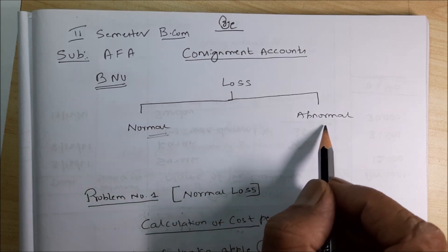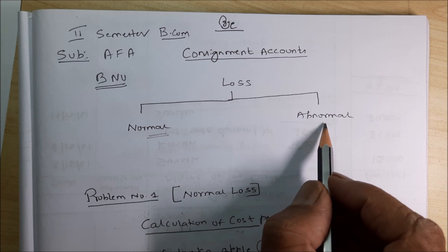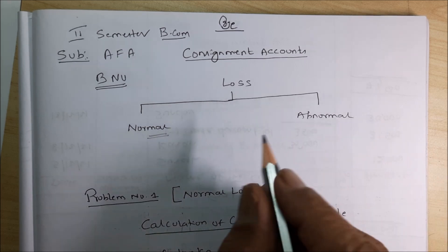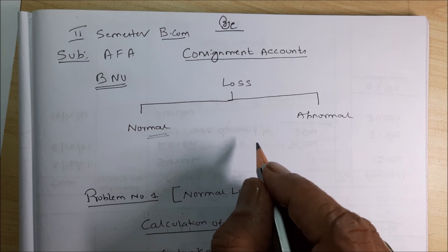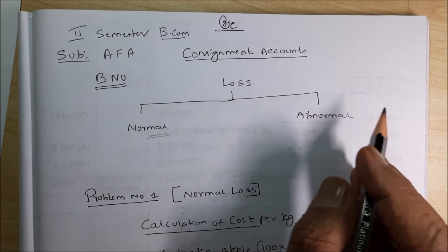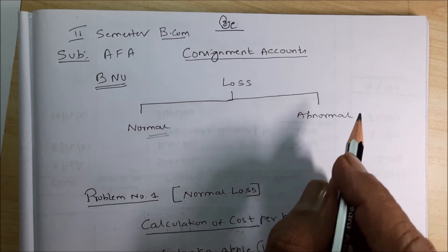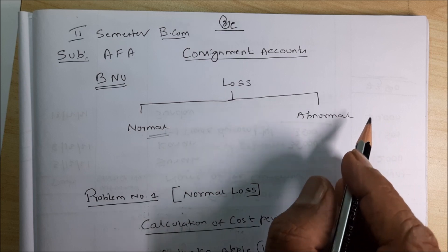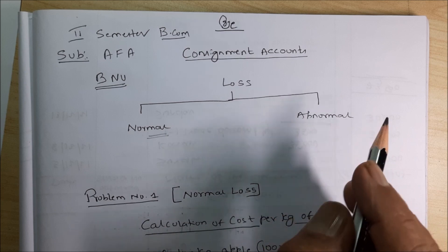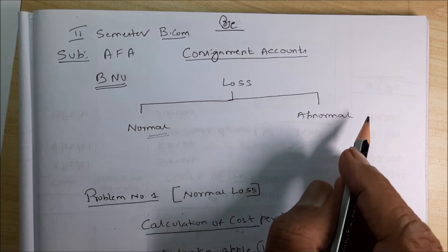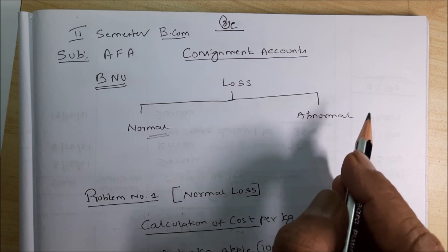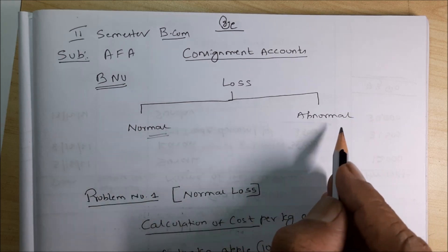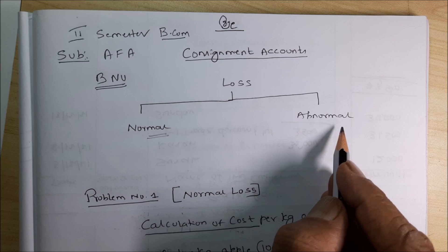What is abnormal loss? It is where the loss can be avoided. Take the example of a fire accident or a transit accident — whatever it is, that can be avoided. That can be pilferage. That can be avoided. It happens intentionally and it can be avoided. Such a loss is not called as normal loss — it is called as practically abnormal loss.